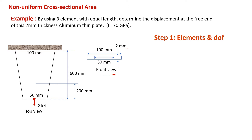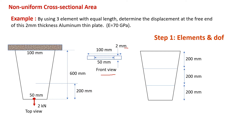The first step, of course, is to create the nodes and elements, and also determine the degree of freedom. Let's draw the outline shape and set the element lengths as the question asks — equal length. We divide 600 into 3 sections so that each element will have 200mm length. Node 1 represents the beginning of the structure or the fixed joint support.